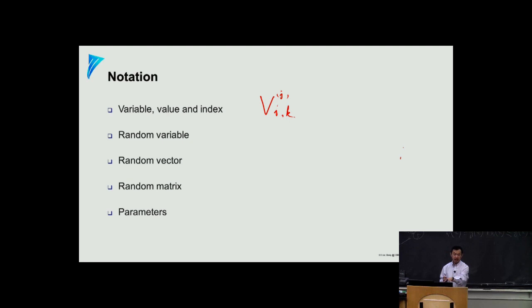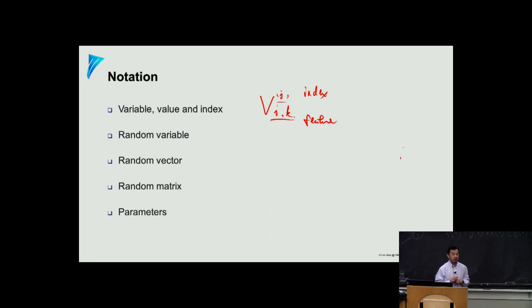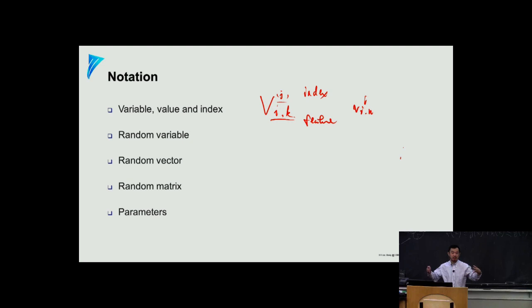We'll discuss that later. I, J, K — what they mean — are dimensions in the feature space, and these are called the index of observations. And then sometimes you'll see a lowercase version for the same variable. The lowercase usually means that this is a variable with a value already — it is observed. A variable is a placeholder. When variables are associated with a value, it becomes a value of the random variable. For convenience, people still call it a variable, but it is actually already at a particular number.